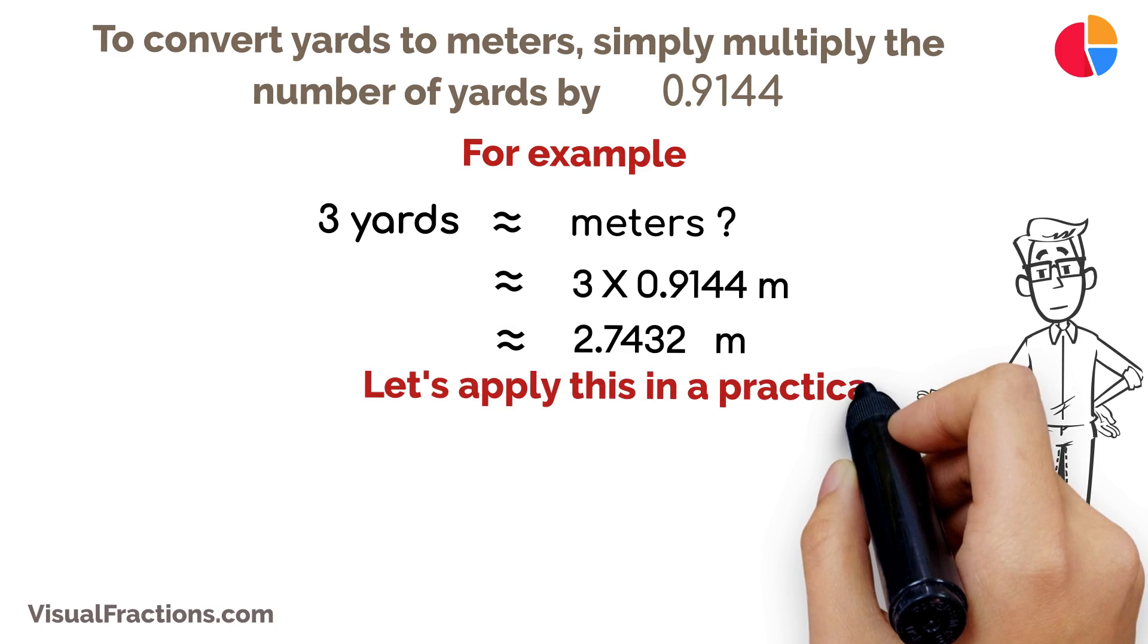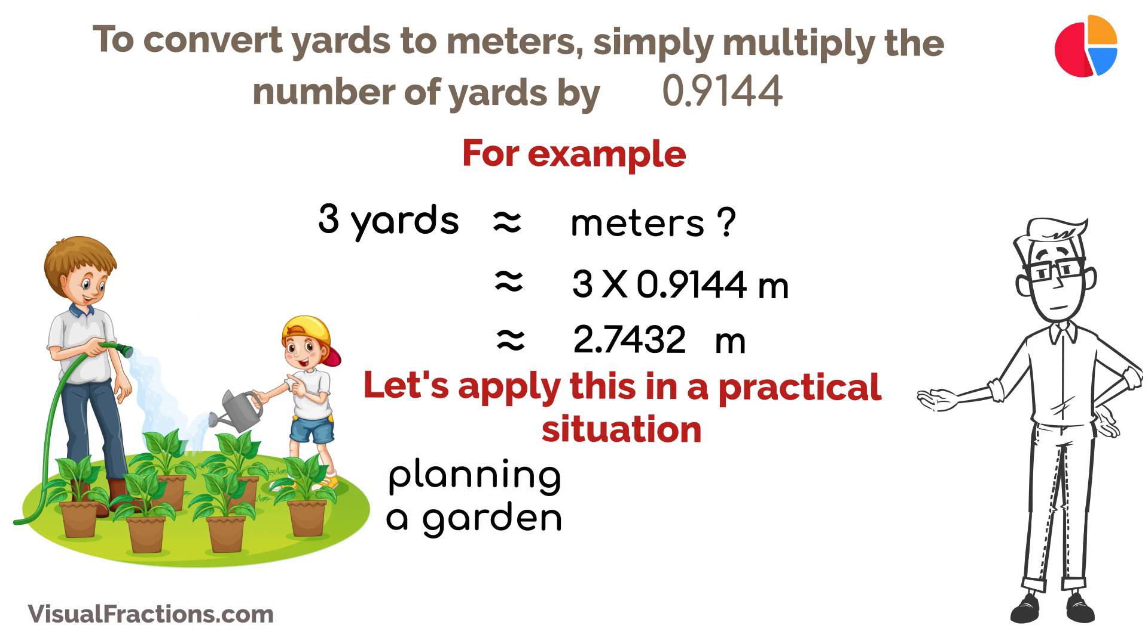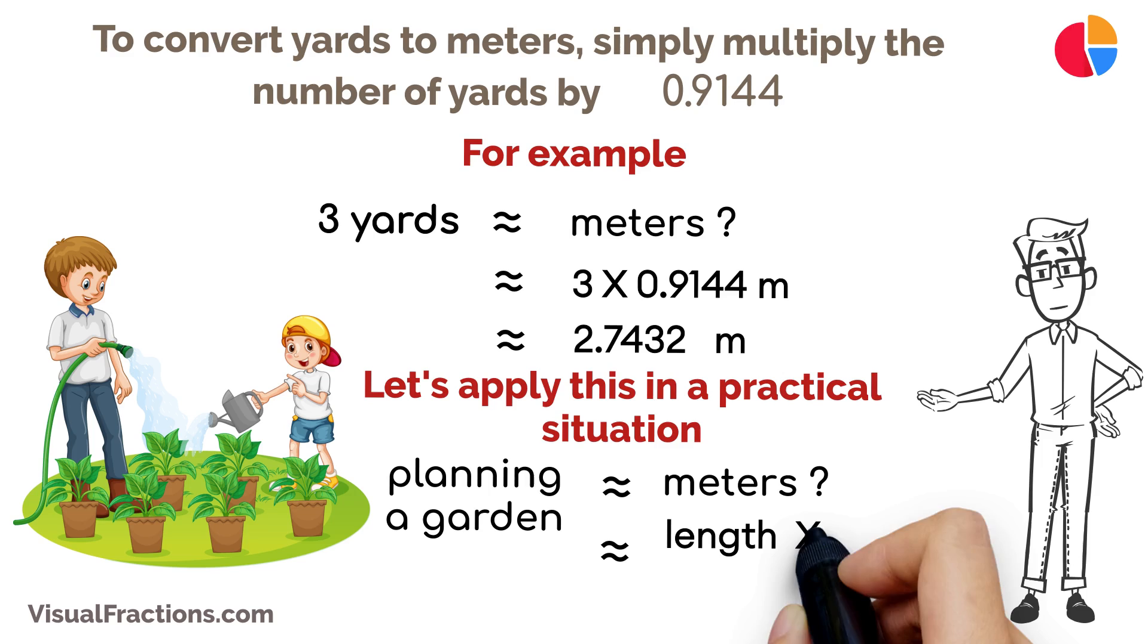Let's apply this in a practical situation. Suppose you're planning a garden layout that's measured in yards, but you need the measurements in meters for purchasing materials. Just multiply the length in yards by 0.9144 to get the equivalent length in meters.